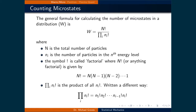The exclamation mark denotes factorial, where n factorial is given by n times (n minus one) times (n minus two), all the way down to times one. As a side note, zero factorial is also equal to one. The large pi symbol means the product of all that follows — in this case, the product of all n_i factorial. Written out explicitly, it would be n_1! times n_2! all the way to n_(i-1)! times n_i!.